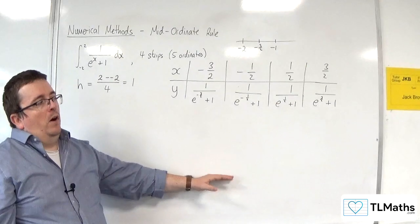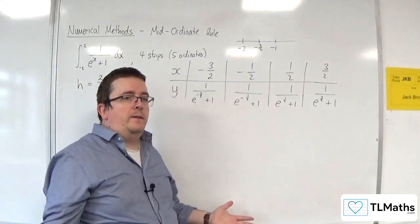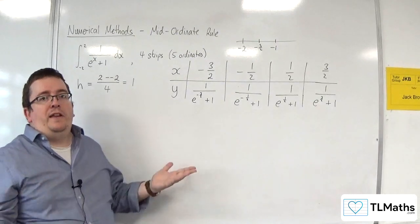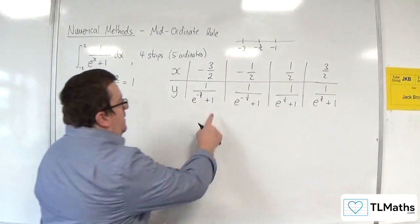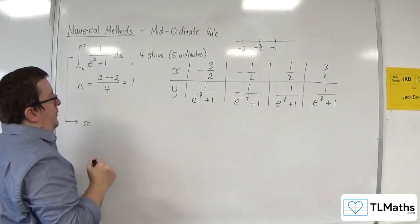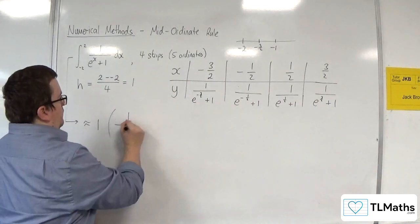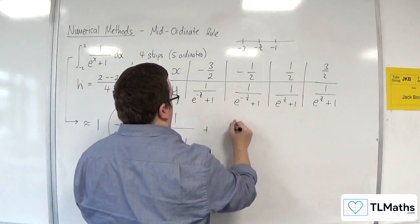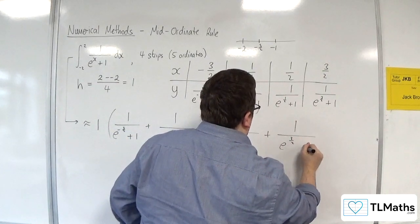So to be safe, if I was doing this in the exam and I wanted to go down that route, I would be probably using the full calculator display. I know I don't need to do that, but I think if I was in the exam doing this, I'd want to make sure. So I'm just going to put them in exact values into the formula. So this is going to be approximately equal to the width of the strip, 1, times by the sum of each of those 4.